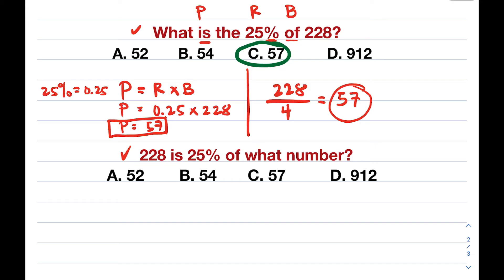So, let's continue with item number 2: 228 is 25% of what number? This is different compared to item number 1. Here, let's understand this well: 228 is 25% of what number? Look at the parts. 228 is, meaning this is your percentage. Part of. We have a percentage symbol, meaning this is your rate. Of what number? Look at the word 'of'. Since it's 'of', automatically, what's missing is the whole, or our base.